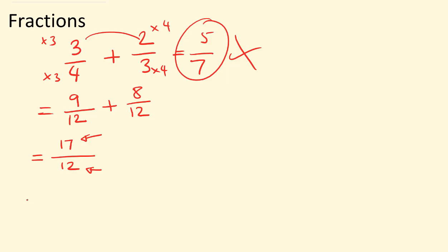So we need to change this into a mixed number. Now, if a question in your GCSE maths exam says to write your answer in its simplest form, you will need to write your answer as a mixed number. So 12 goes into 17 once, we have five remainder, and the denominator stays the same. So we have an answer of one whole and five twelfths.